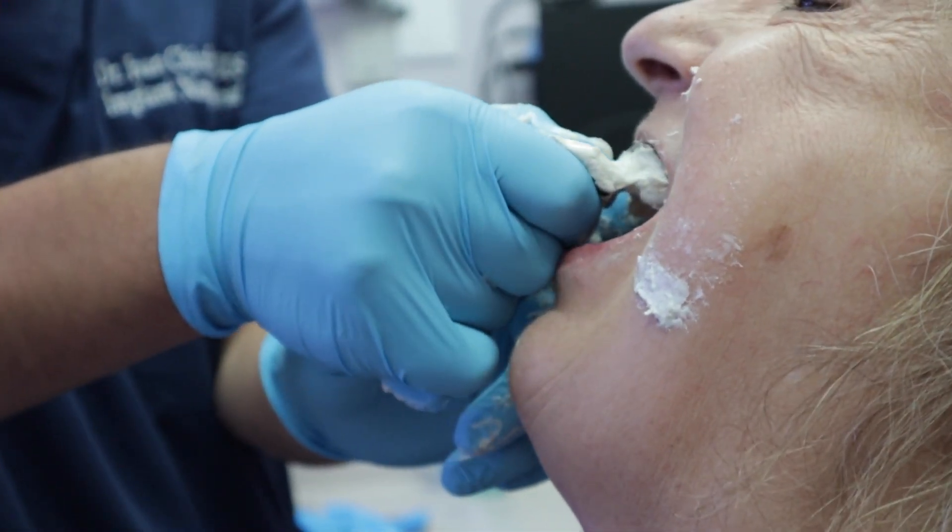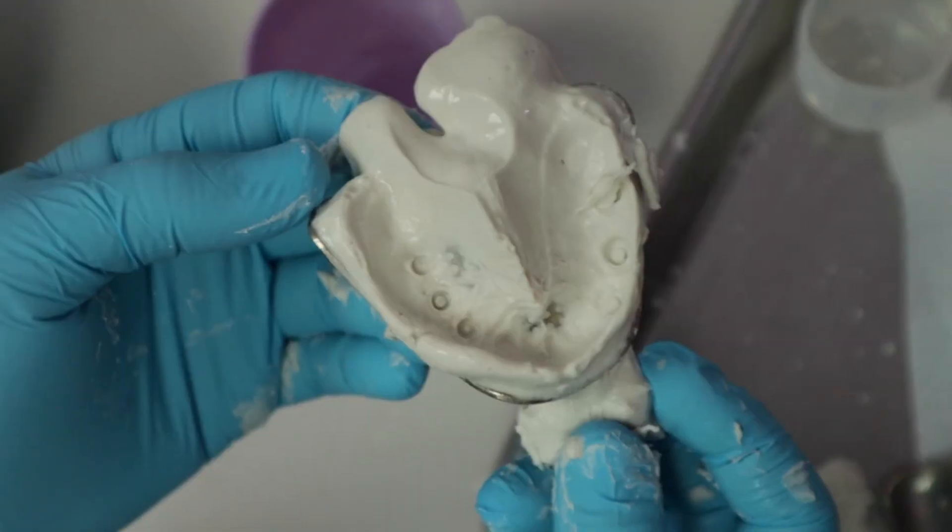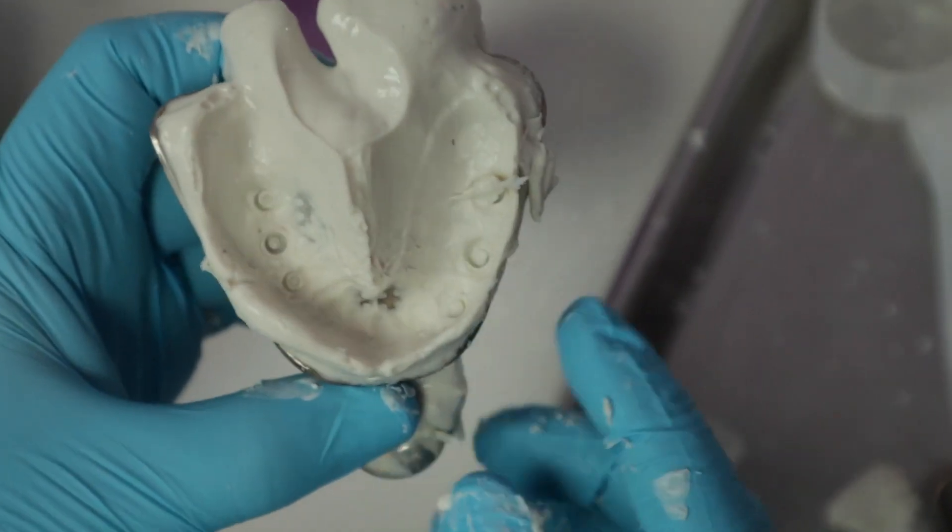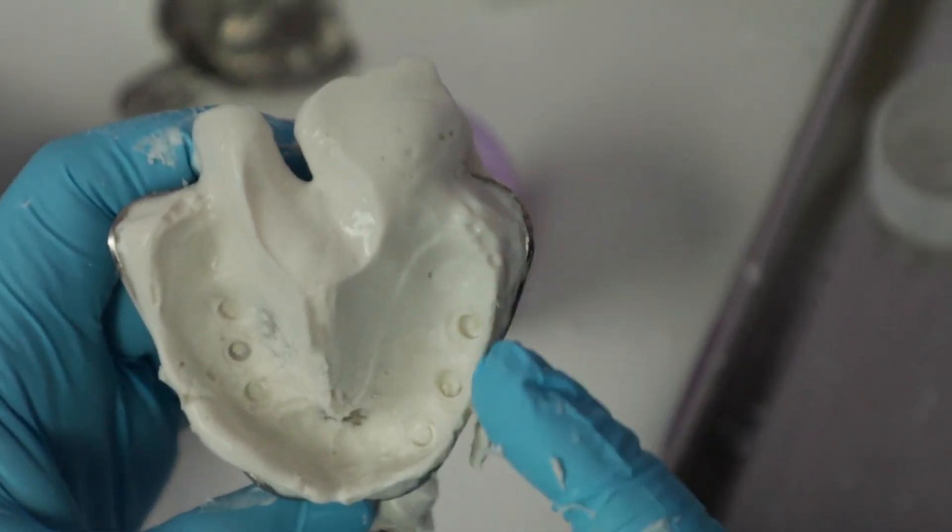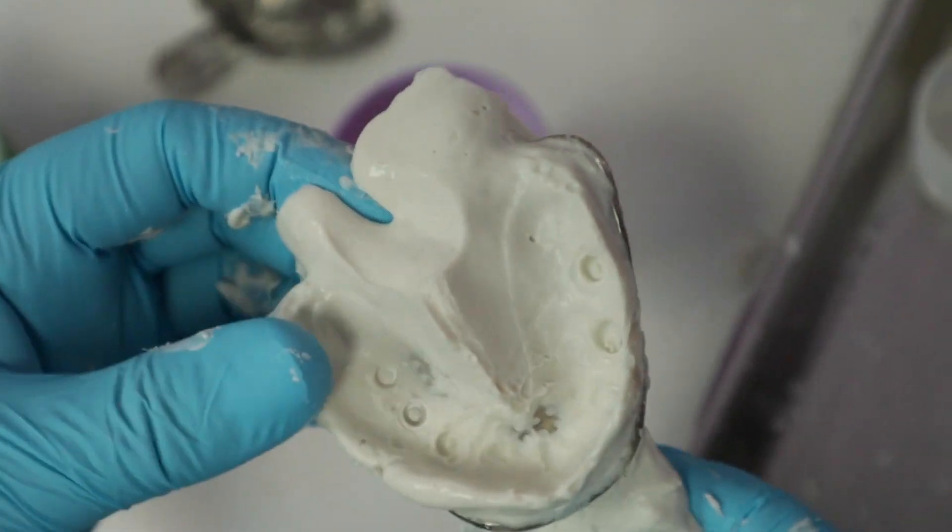It's real important you kind of push down here in the front too to make sure you get the frenum attachment. Relax, there you go. So I'm going to pull it off now. Pull it off from the corner first. So this is not what you want, right? See, we missed a lot of the vestibule right here, just a lot right here. So I'm going to retake this.